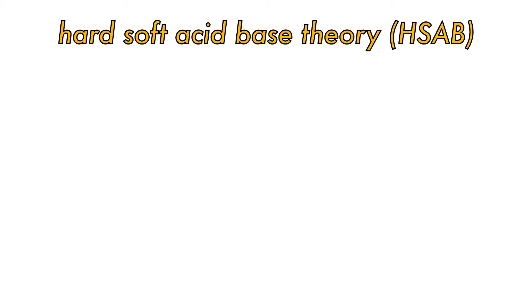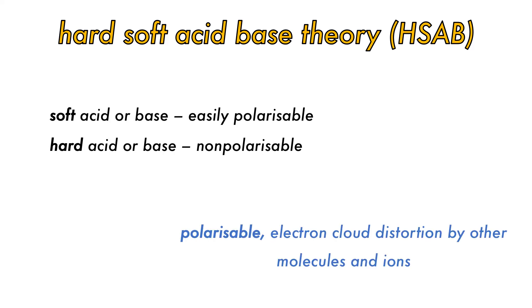A soft acid or base is one which can be easily polarized, whereas a hard acid or base is non-polarizable. Chemical species are said to be polarizable if their electron clouds can be distorted by other chemical species.